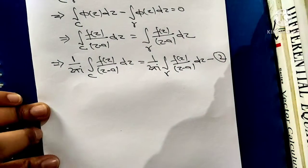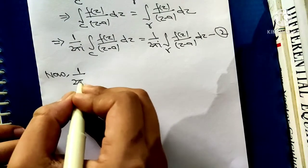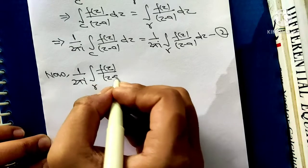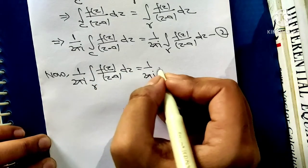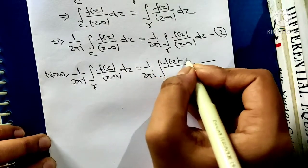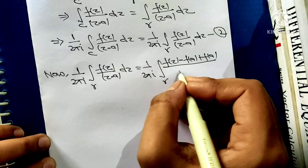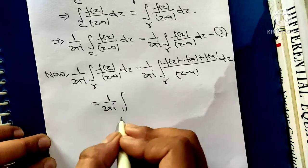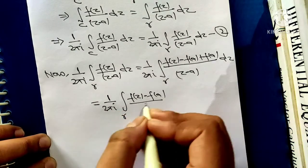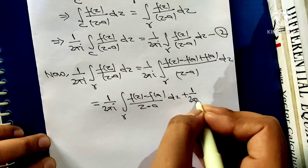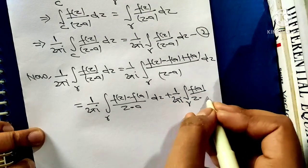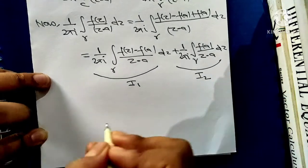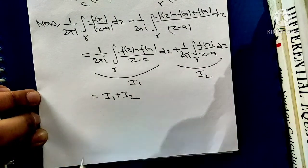Now we are going to solve the right-hand side: 1 upon 2πi times the integral over gamma of f(z) upon z minus a dz. I will add and subtract f(a) in the numerator and split it into two integrals: I1 equals 1 upon 2πi times the integral over gamma of [f(z) minus f(a)] upon z minus a dz, and I2 equals 1 upon 2πi times the integral over gamma of f(a) upon z minus a dz.